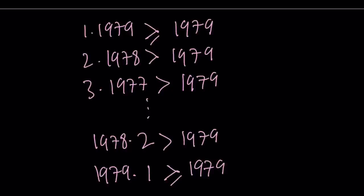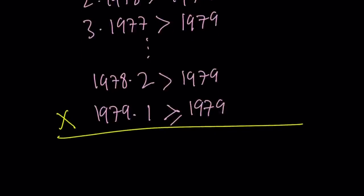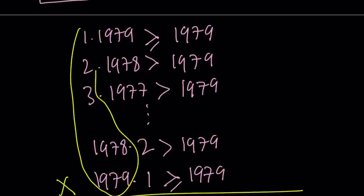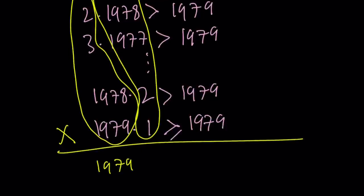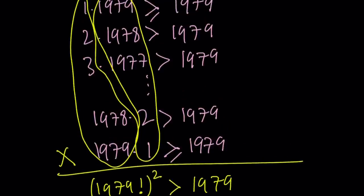How about multiplying these side by side? If you multiply these numbers, this is 1979 factorial times itself, which is 1979 factorial squared. And on the right-hand side, we have 1979 written 1979 times and multiplied, so it is 1979 to the 1979th power. I can put a greater than sign because all the numbers on the left are greater except for two which are equal. But as a product, definitely the left-hand side is greater than the right-hand side.